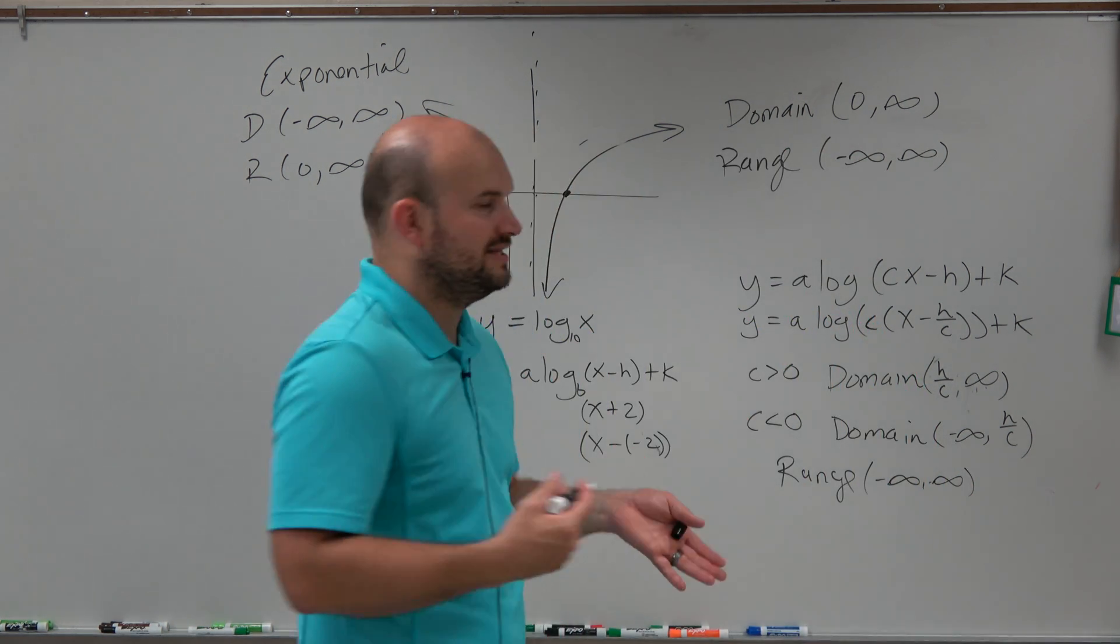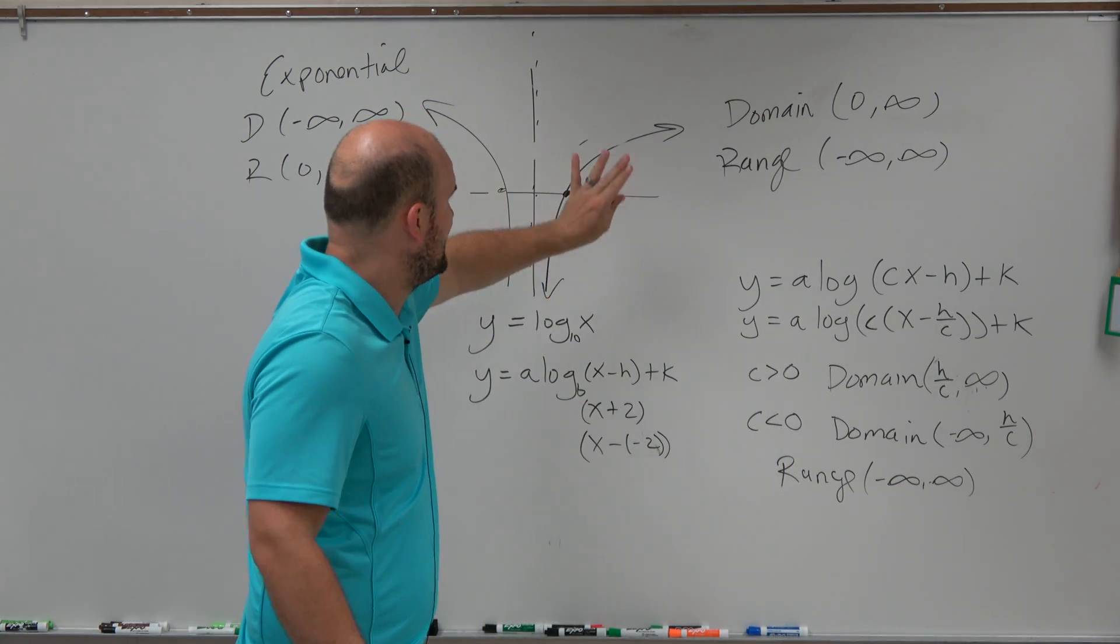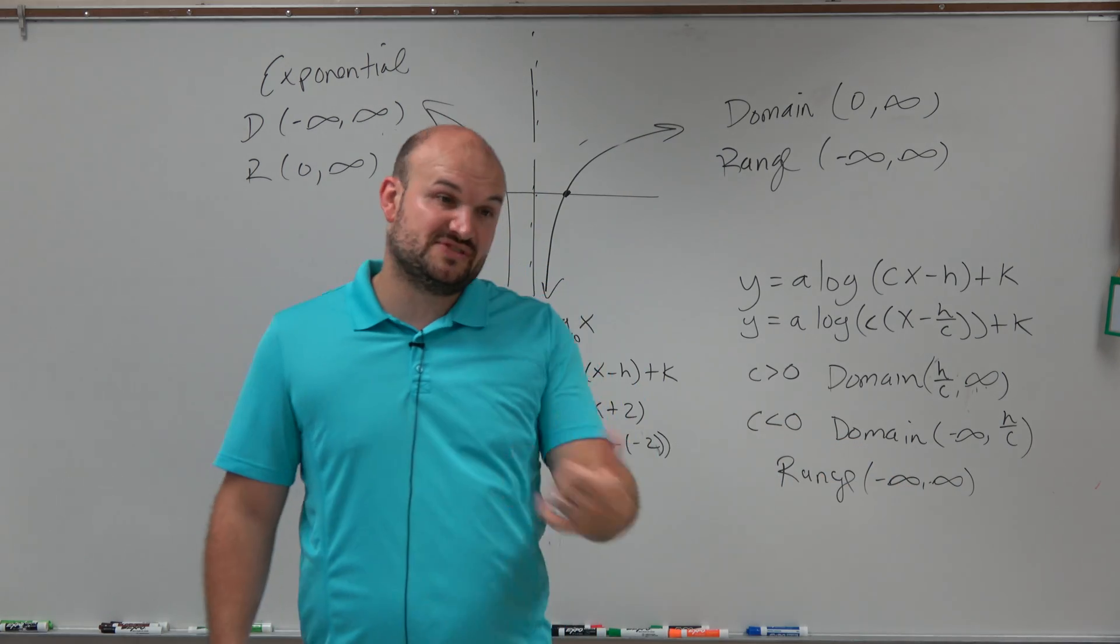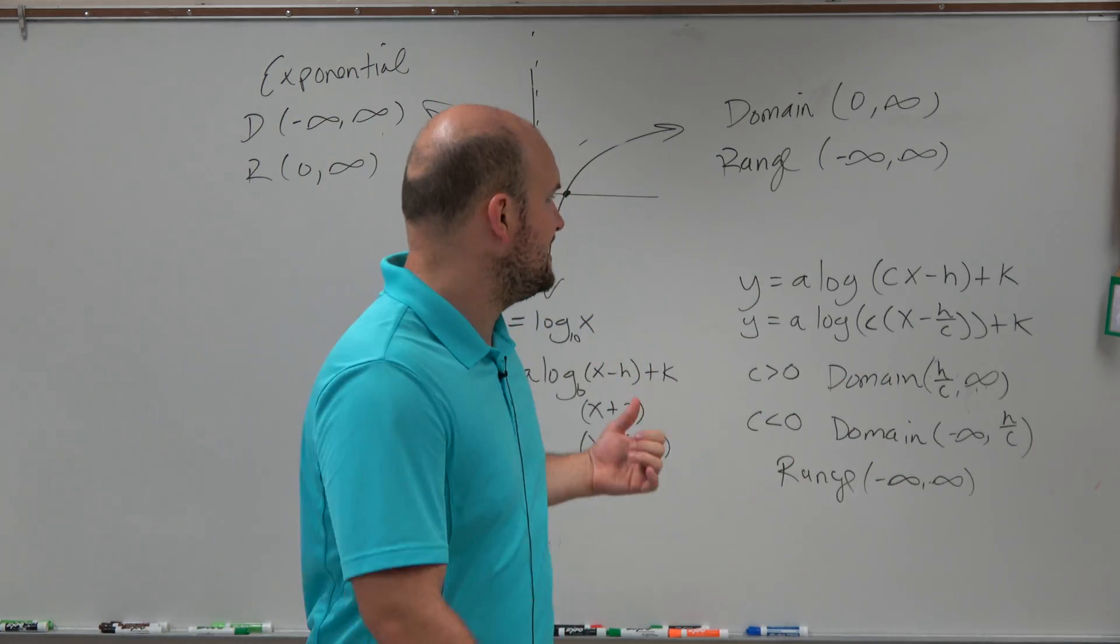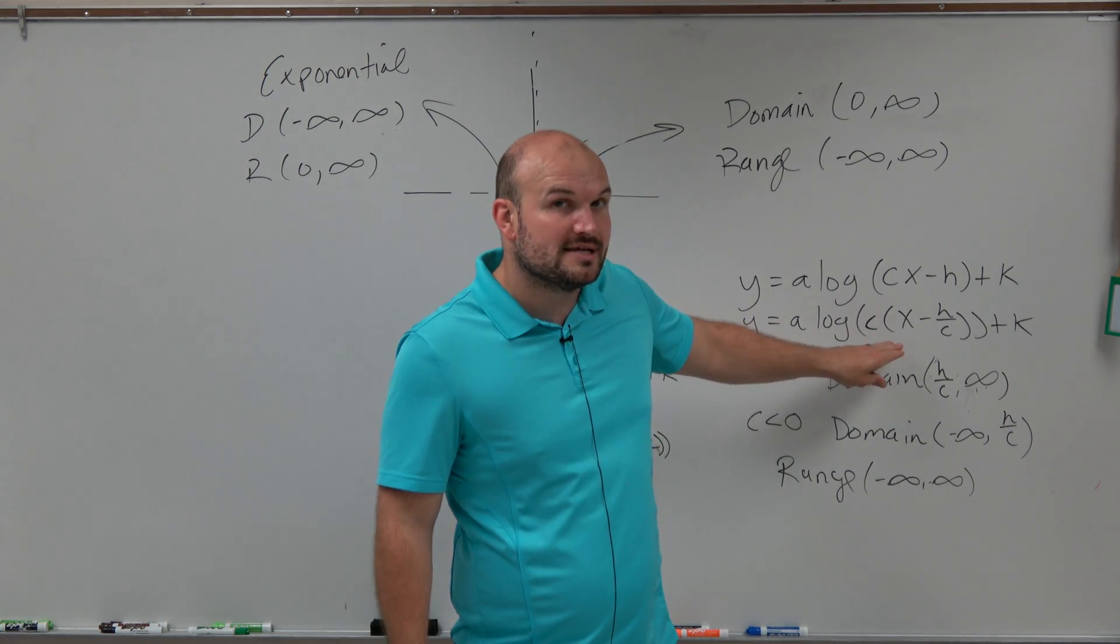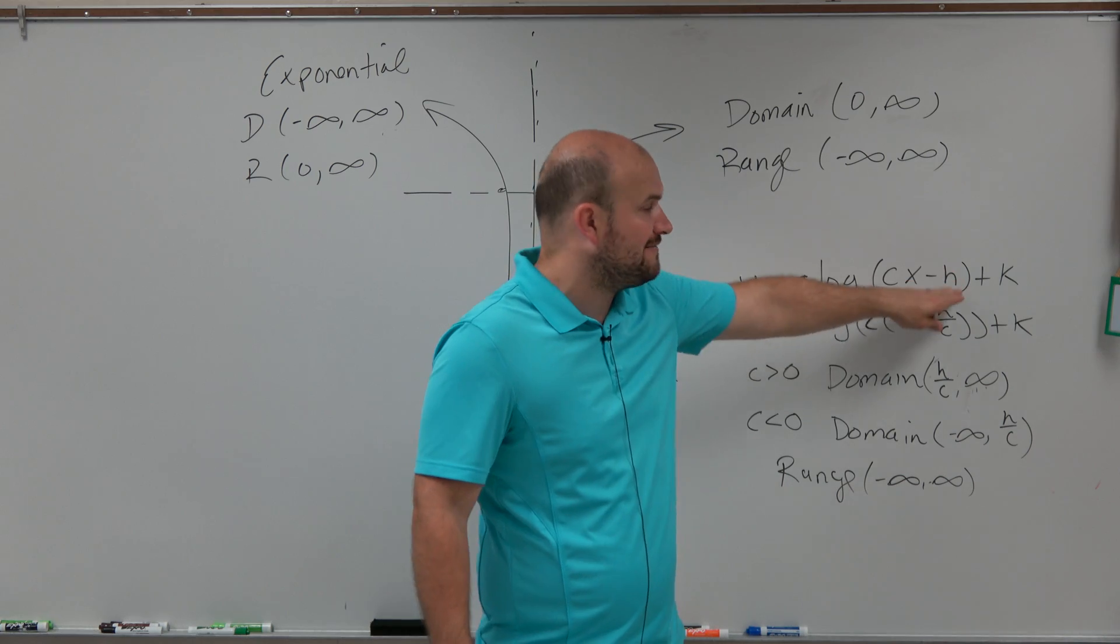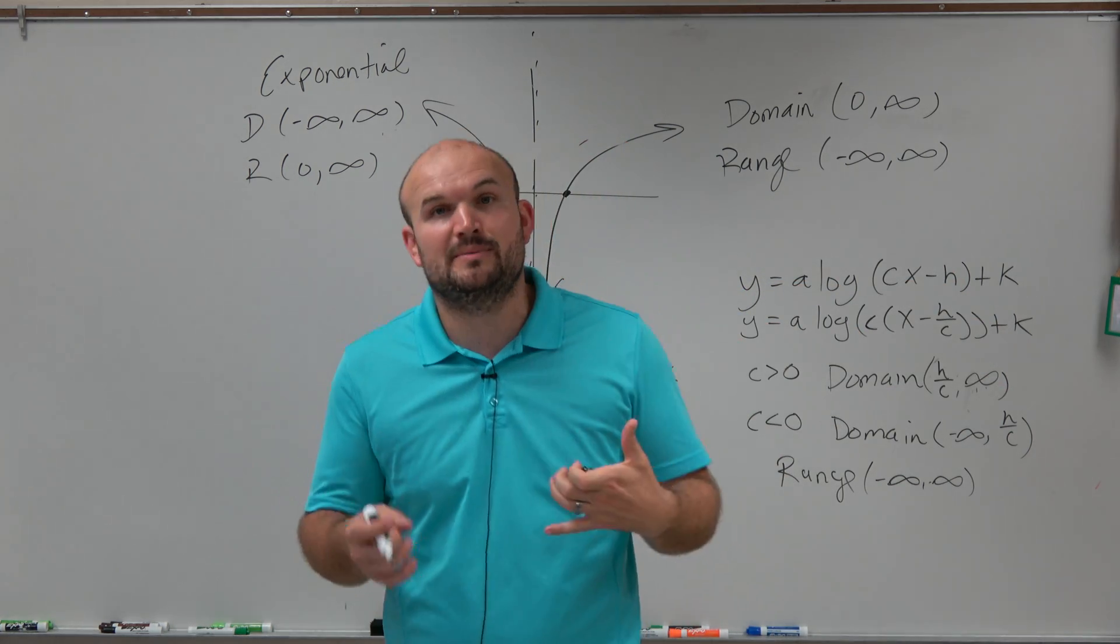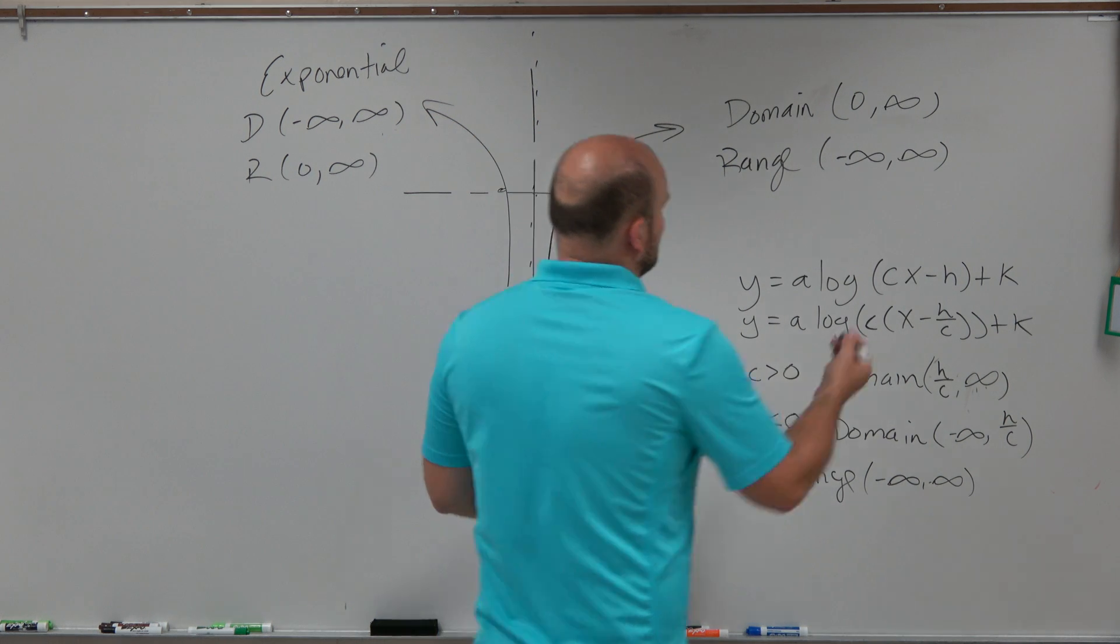Now the easiest way to look at this is just to have c being positive or negative, and you can see that if it's just positive or negative, it reflects it. But I also want to include, you know, if c was a different number as far as like 2 or 3, which does happen, you just got to make sure that you factor that out so you can apply the correct transformation.